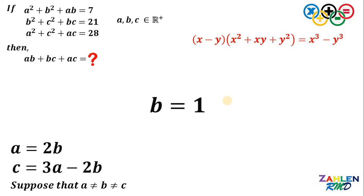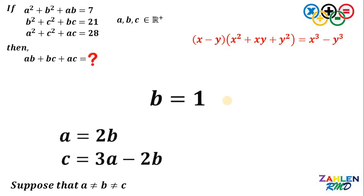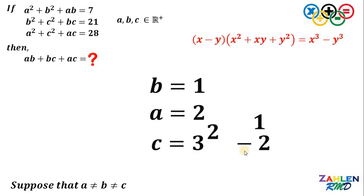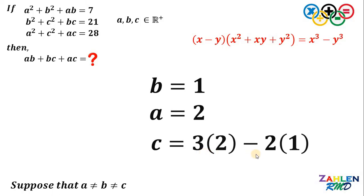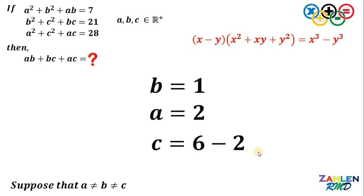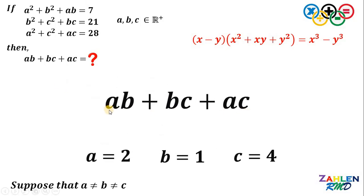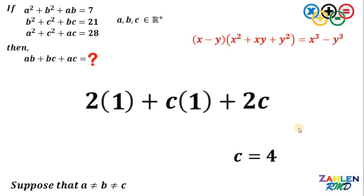Now we are ready to solve for the values of a and c. Since a equals 2 times b, replacing b with 1 gives a equals 2 times 1, or simply 2. So we have b equals 1 and a equals 2. To solve for c, we use c equals 3 times a minus 2 times b, which is 3 times 2 minus 2 times 1, giving us 6 minus 2, which equals 4. So a equals 2, b equals 1, and c equals 4.